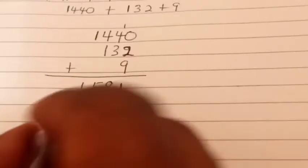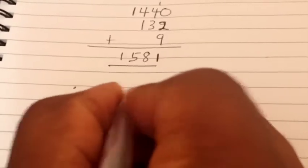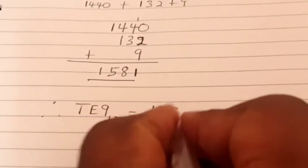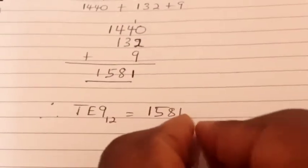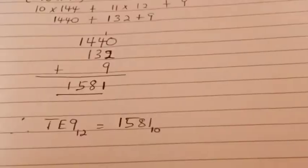Adding column by column: 0 plus 2 plus 9 gives 11, write 1 carry 1. Then 4 plus 3 plus 0 plus the carried 1 gives 8. Then 4 plus 1 gives 5, and 1 in the thousands place. So we get 1581. Therefore, TE9 base 12 is equal to 1581 base 10.